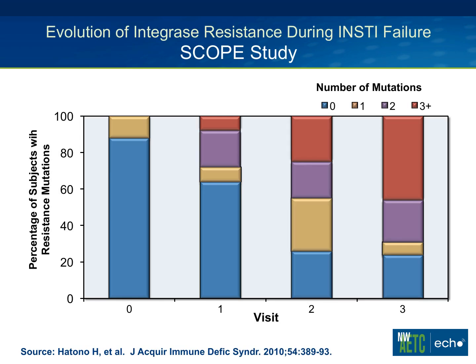What happens if you keep a person on a failing regimen? This study looked at individuals failing on a raltegravir-based regimen at sequential visits. The blue indicates no integrase mutations, orange indicates one, purple indicates two, and red indicates three or more. As time goes on, things get worse — very few people have zero mutations if kept on after three visits, and many accumulate three or more mutations. We want to avoid this stacking of mutations. Granted, it will happen in some clinical practice, but when we can avoid it, we should.